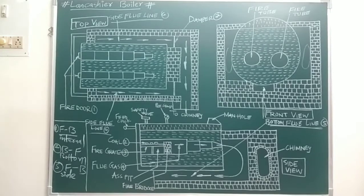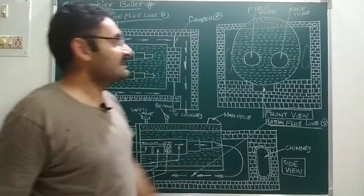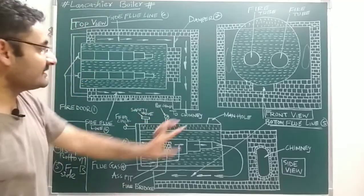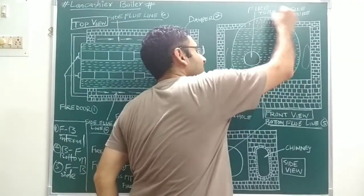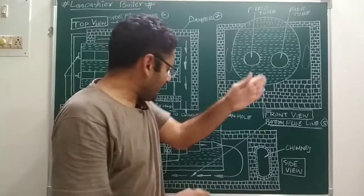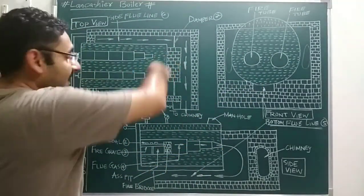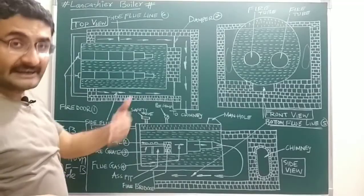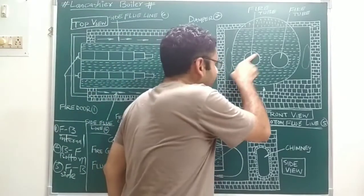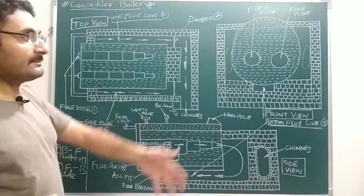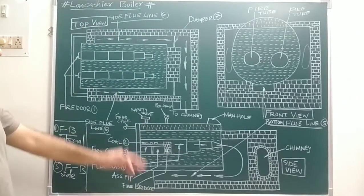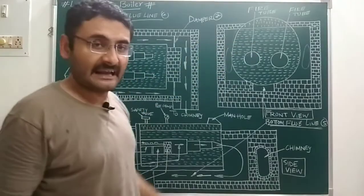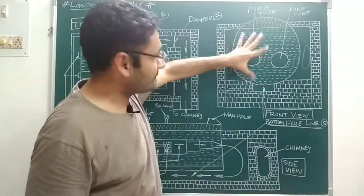With the help of these three stages, heating of water takes place and steam is generated at the top of the shell. The diameter of the shell is around 2 meters and the length is around 8 to 10 meters. The diameter of the fire tubes is around 80 to 100 centimeters, and the length of the fire tubes is also around 10 meters, matching the shell length.